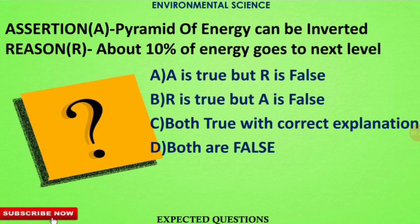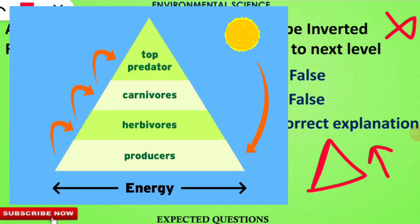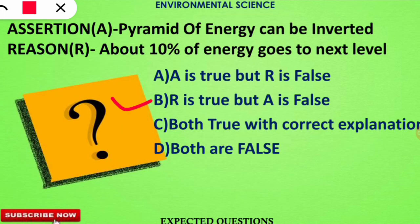The next assertion-reasoning question states that the pyramid of energy can be inverted. The reason given is that about 10% of energy moves to the next trophic level in any ecosystem. If your concept is clear, you'll immediately know the assertion is wrong — the pyramid of energy cannot be inverted; it is always upright because energy decreases from lower to upper levels. The correct option is B: reason is true but assertion is false.